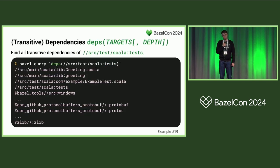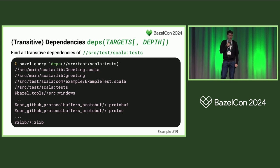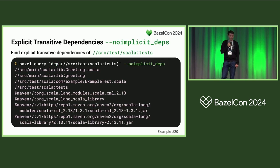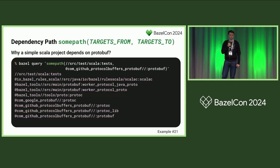Next, the deps() function is one of the most common functions in Bazel queries — it gives you the transitive dependencies of the targets you provide, with an optional depth limit. For just one simple target, the output can be about 900 labels including protobuf, some Windows source, and even zlib — all coming from the toolchain via implicit deps. We can get rid of this with the --noimplicit_deps flag, which is very useful. Now the output fits on a slide showing just two sources and some jars from a trivial repo. You probably usually want to use this flag.